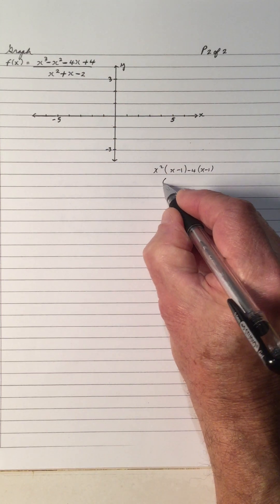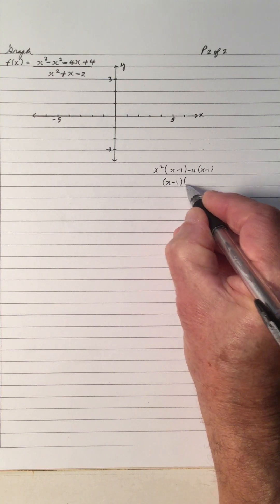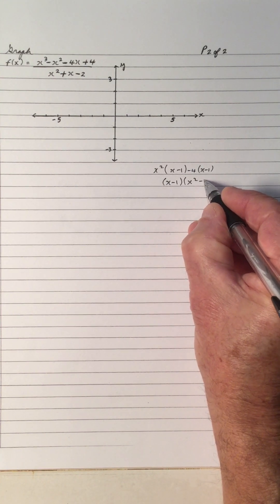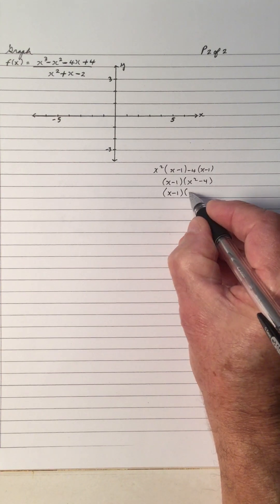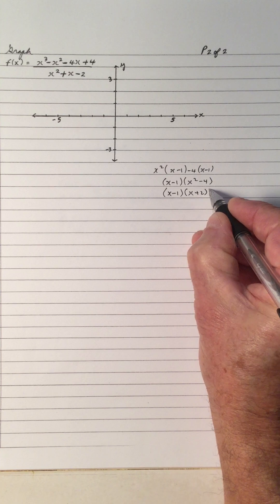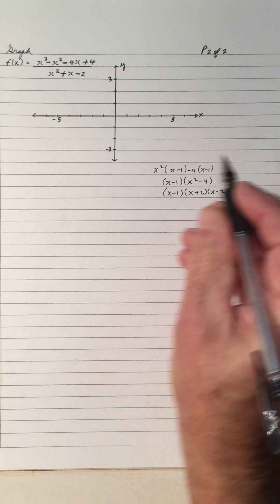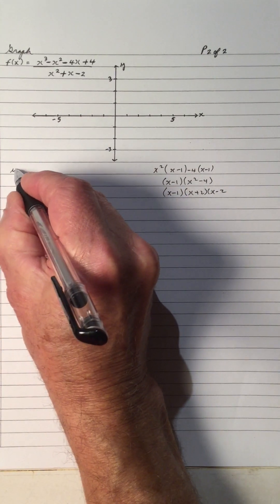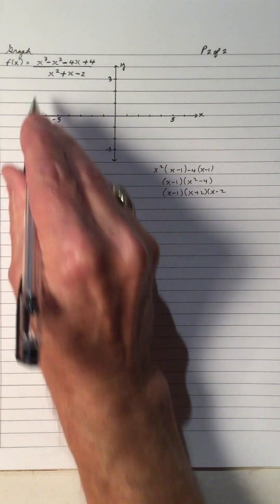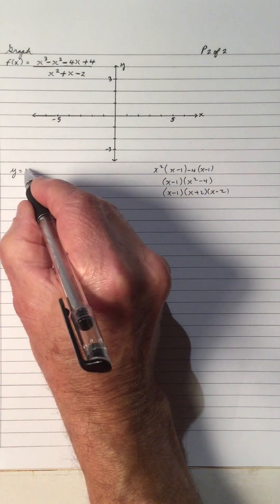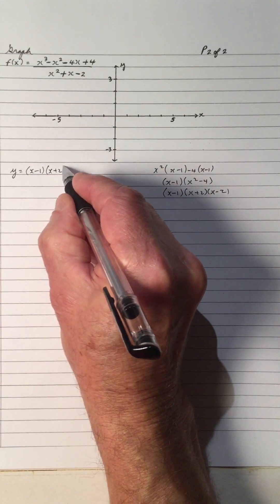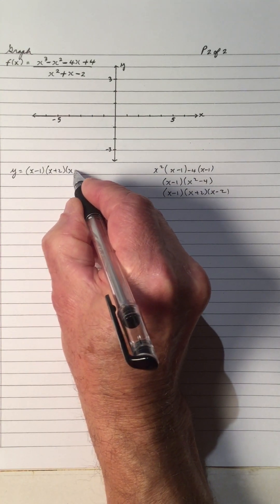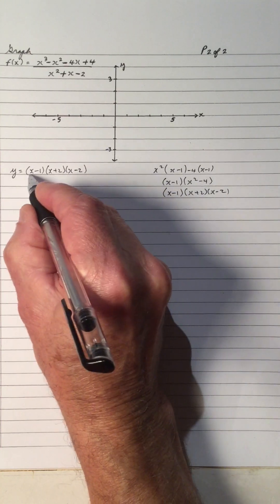So that gives us x minus 1 times x squared minus 4, which is x minus 1. And this is difference of two squares, which is x plus 2 times x minus 2. So we have y equals, so the top part becomes x minus 1, x plus 2, x minus 2.